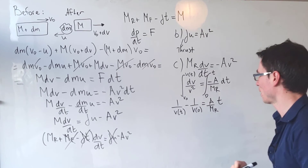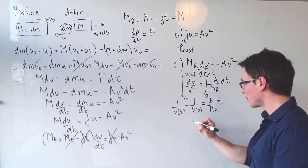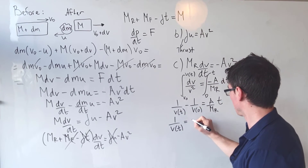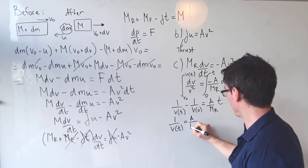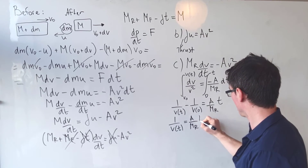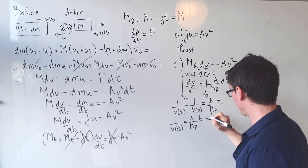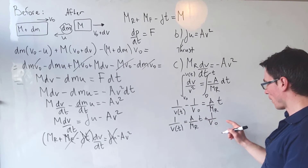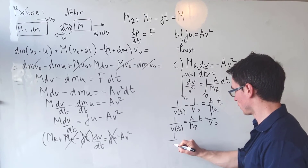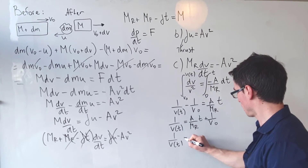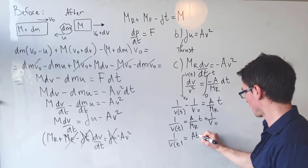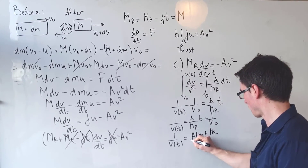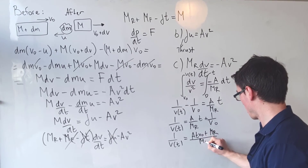Rearranging, 1/v(t) = (a/m_R)·t + 1/v₀. Combining over a common denominator: 1/v(t) = (a·t·v₀ + m_R) / (m_R·v₀).